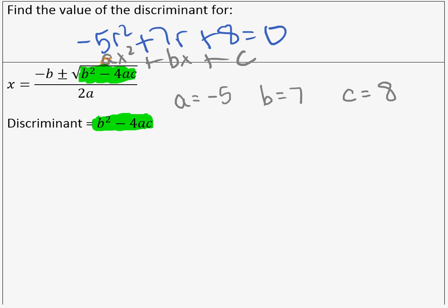So we're going to plug this in to b squared minus 4ac. So I'm going to have something squared minus 4, leave a space for a, and leave a space for c. So we said that b was 7, we said that a was negative 5, and we said that c was 8.